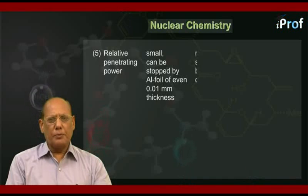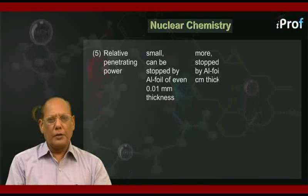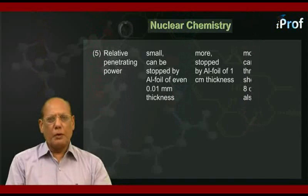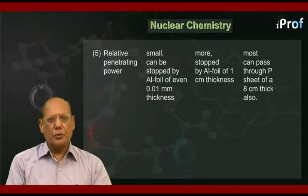Penetrating power is more for beta, but they can be stopped by aluminum foil of one centimeter thickness. This power is most for gamma. They can pass through even a lead sheet of about eight centimeter thickness.